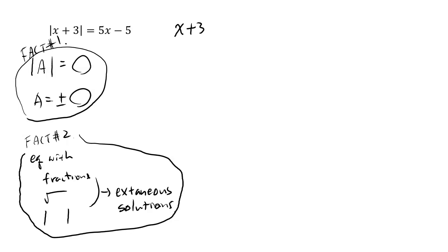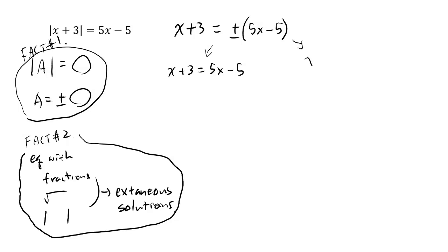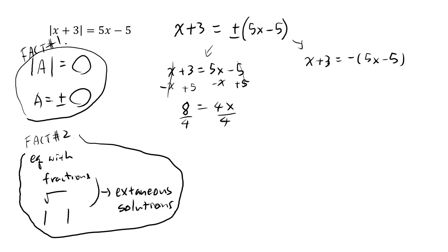So let's try this out. For x plus 3 with absolute value, you take away the absolute value and apply the rule: it becomes plus or minus of 5x minus 5, with parentheses around the entire thing. So you have two equations: x plus 3 equals 5x minus 5, and x plus 3 equals negative of 5x minus 5. Over here, moving terms around, 5x minus x is 4x, and dividing by 4 gives x equals 2.